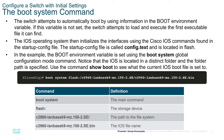The boot system command: the switch attempts to automatically boot using information in the boot environment variable. If this variable is not set, the switch attempts to load and execute the first executable file it can find. The IOS operating system then initializes the interfaces using Cisco IOS commands found in the startup config file, called config.txt, which is located in flash. Cisco IOS devices store all configuration files as text files.